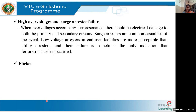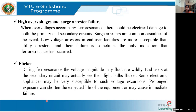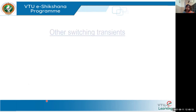Fourth, flickering. When there is a sudden inrush of current or the voltage increases to a very high value, you can notice the lights becoming dimmer. During ferroresonance, the voltage magnitude may fluctuate widely, and users at the secondary circuit might see their lights flicker. Electronic appliances are very susceptible to such voltage excursions, and too much flickering will automatically reduce the lifespan of the equipment.